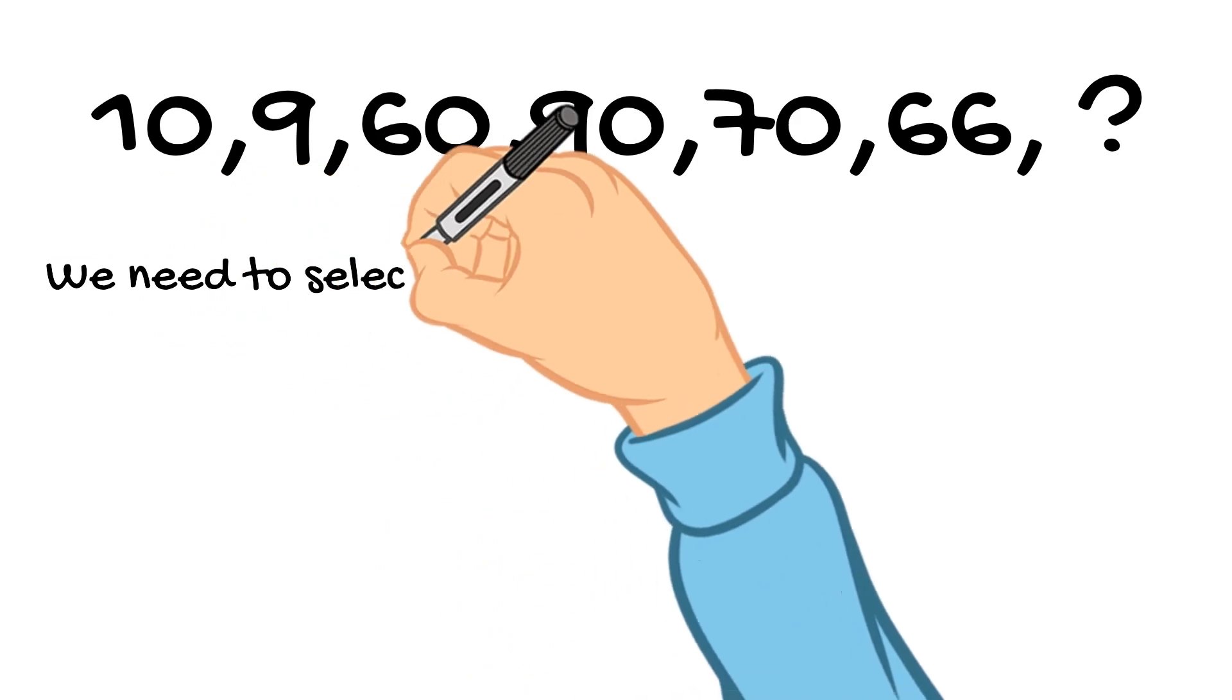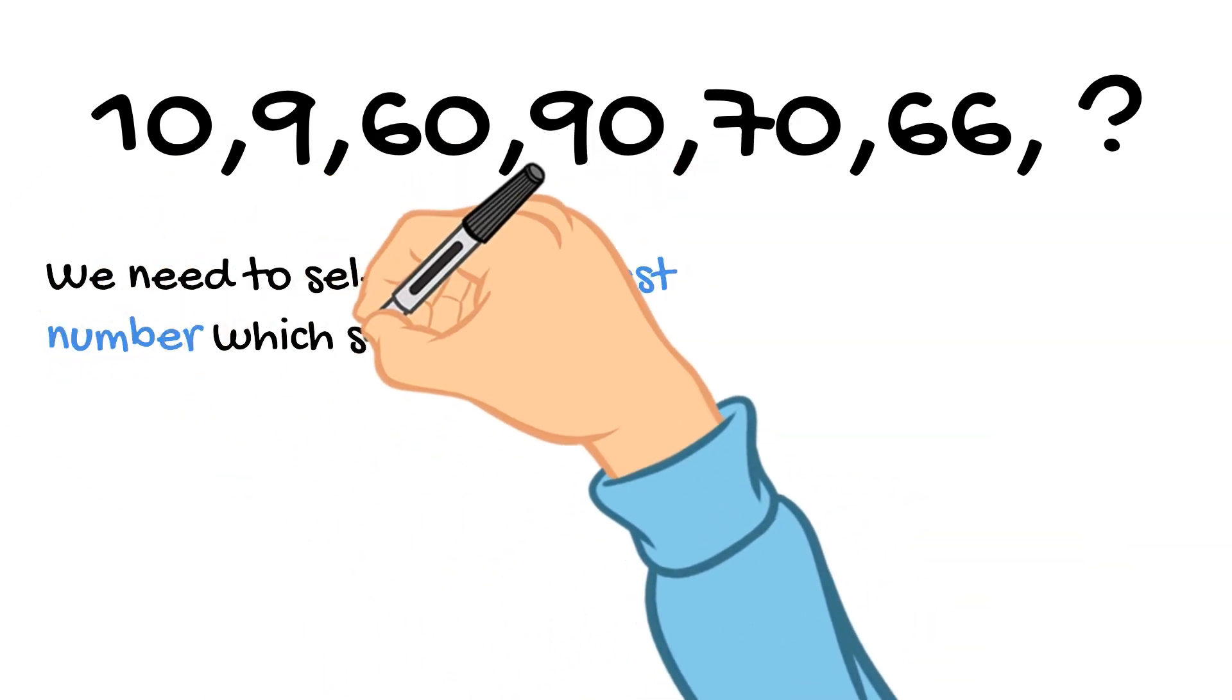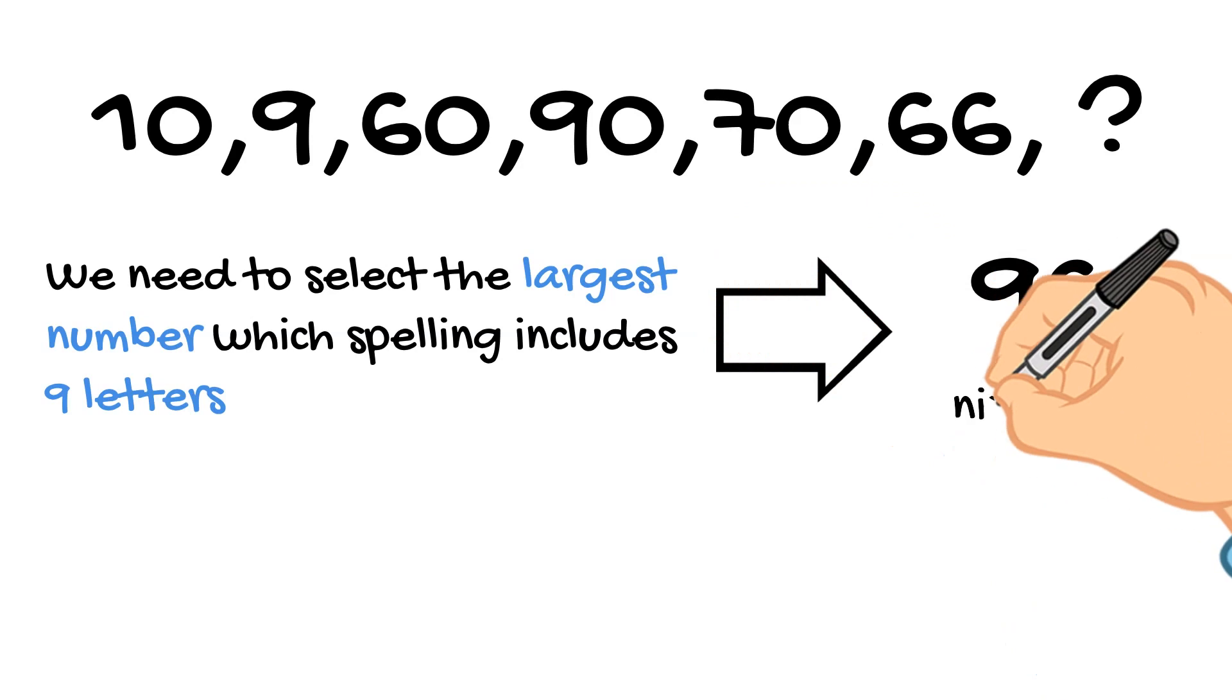Therefore, we need to select the largest number which spelling includes nine letters. This number is 96. Looks right?